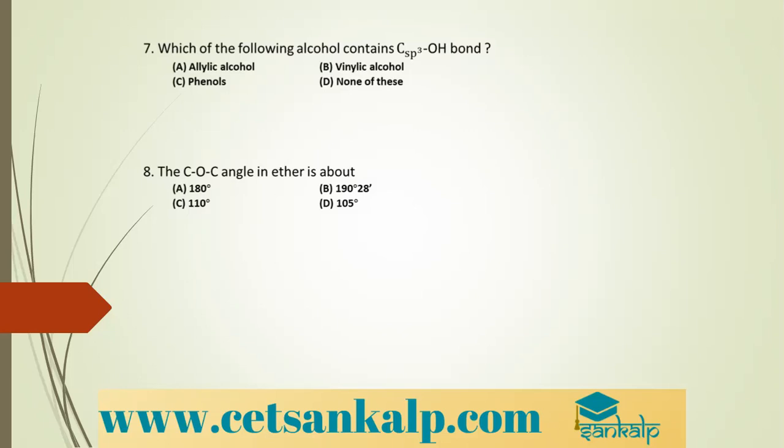In ethers, the two bond pairs and two lone pairs of electrons on oxygen are arranged in a tetrahedral arrangement — approximately tetrahedral geometry.